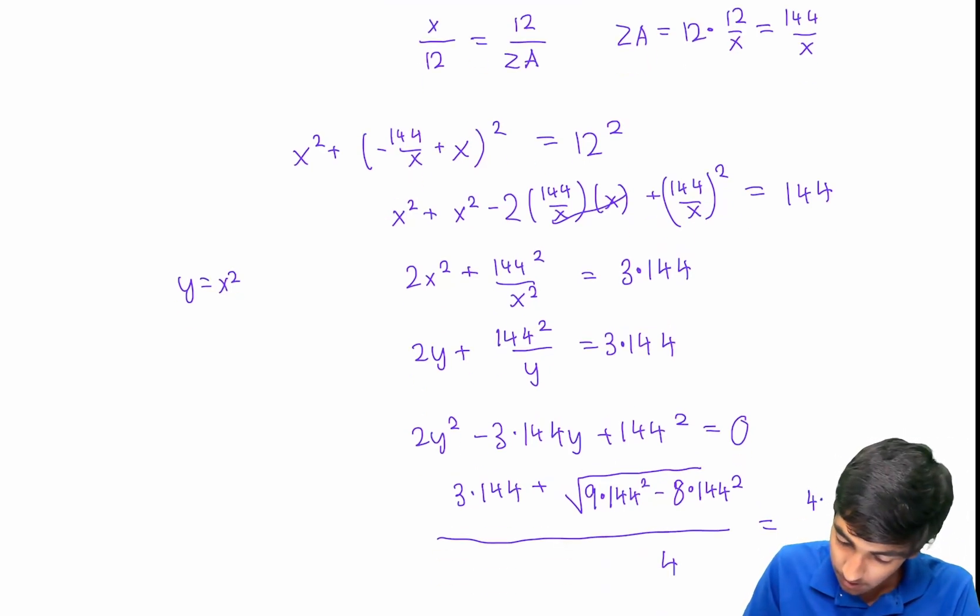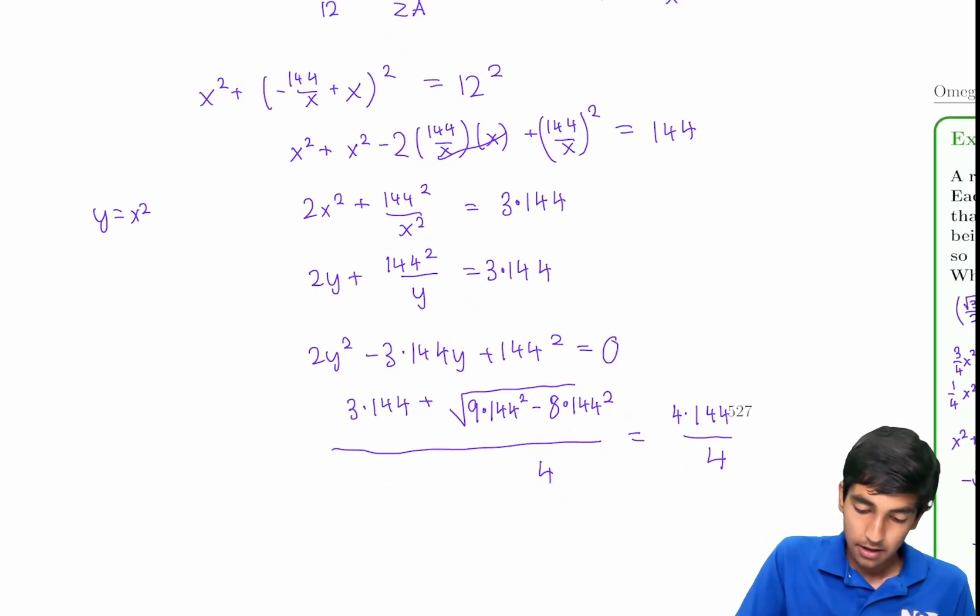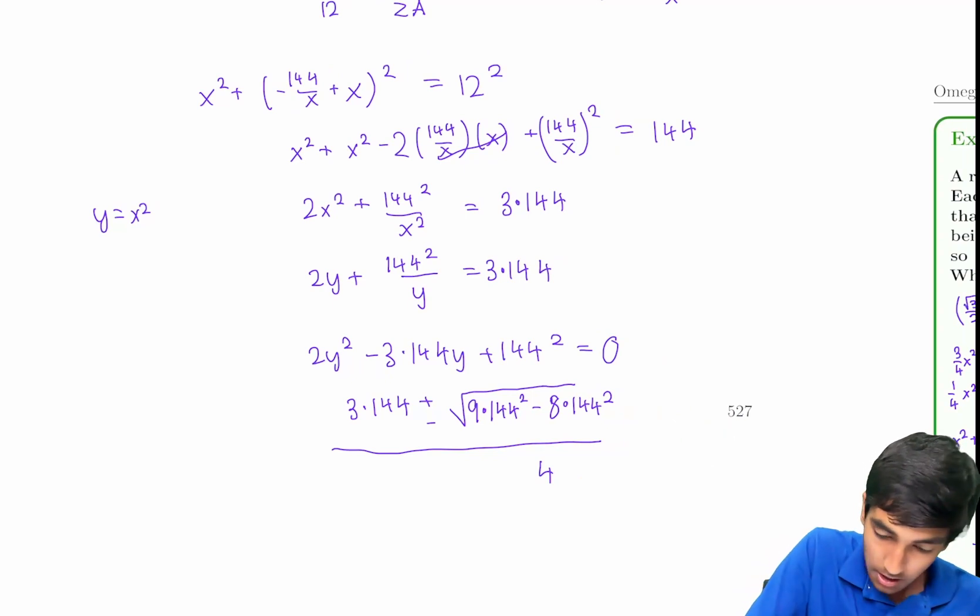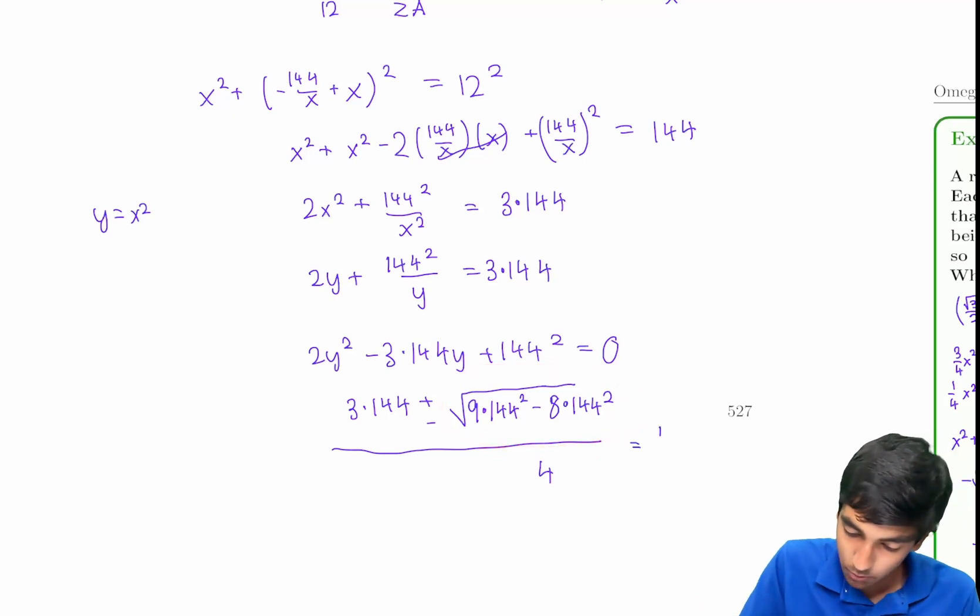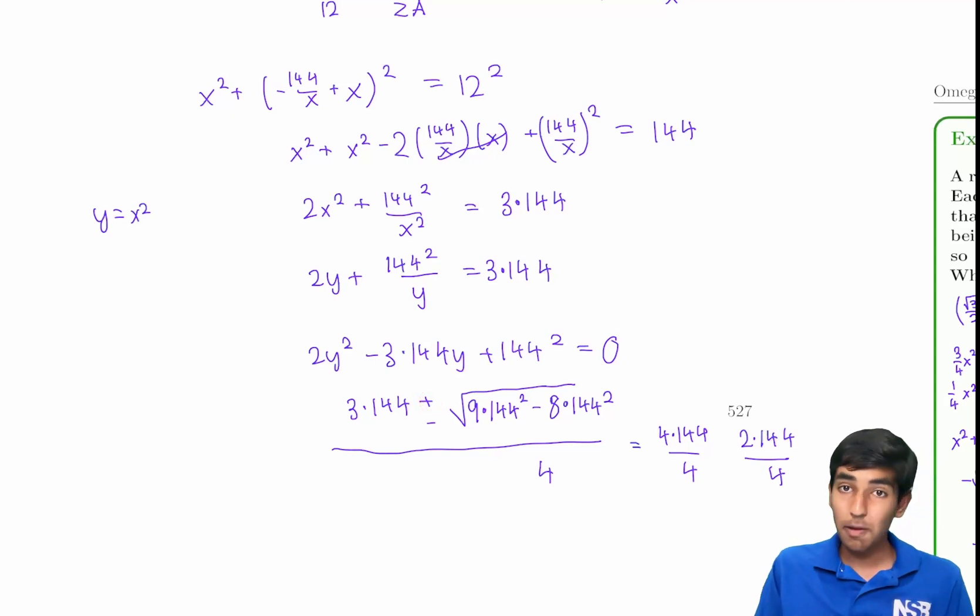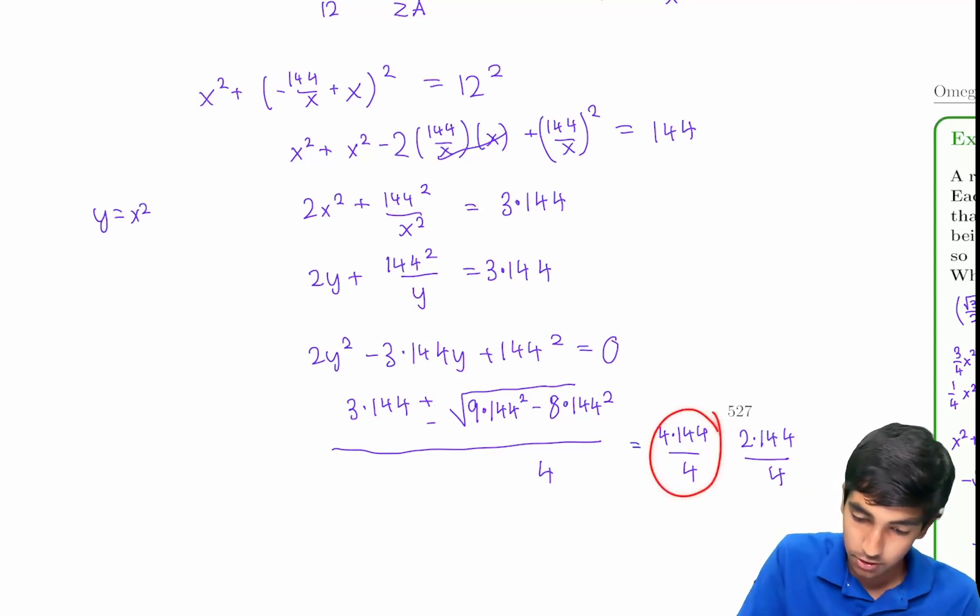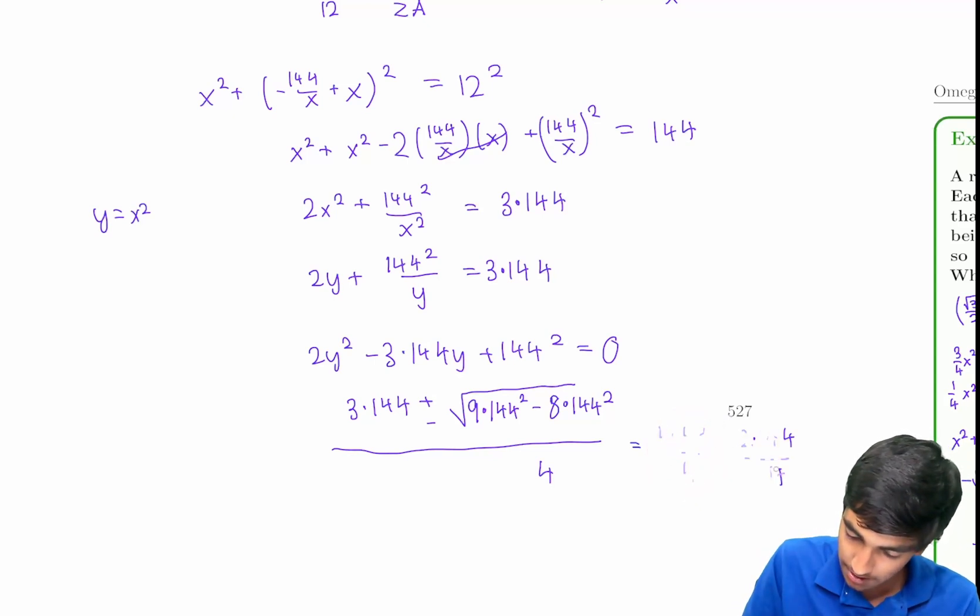That's going to be 8 times 144 squared over 4, and inside here it's just 144 squared. That becomes 4 times 144 over 4. Let's keep plus or minus for now. So there are two possible values. This whole thing is 144. So you can either have 4 times 144 over 4, or 2 times 144 over 4. Most of the time, it's the plus thing, but sometimes if the plus thing is degenerate, then it could be the minus thing. But you're never going to have negative lengths.